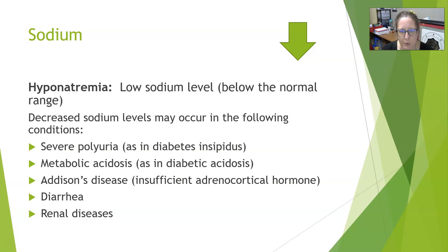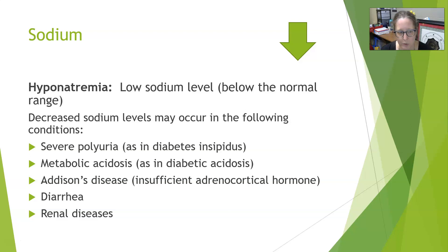Hyponatremia is low sodium levels below the normal range. Decreased sodium levels can occur in the following conditions: severe polyuria — producing lots of urine — such as in diabetes insipidus, the water diabetes, where there's a lack of antidiuretic hormone and the patient produces copious amounts of very dilute urine, and sodium can be lost in that process. Metabolic acidosis, as in diabetic acidosis, can drive sodium levels down. Addison's disease involves insufficient adrenal cortical hormone, especially aldosterone — aldosterone reclaims sodium from urine back into the blood, so without enough of it, the patient can end up with low sodium levels.